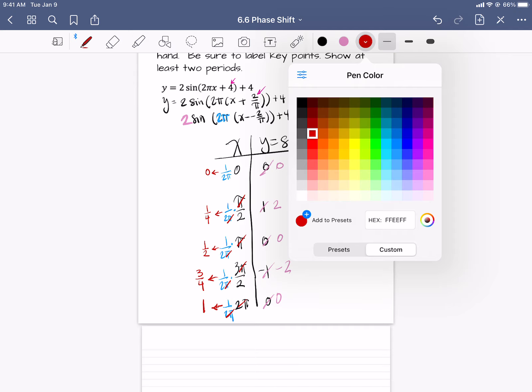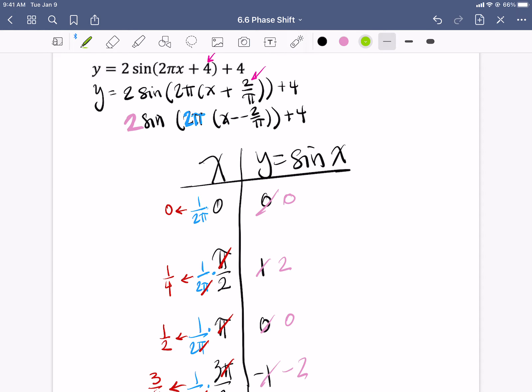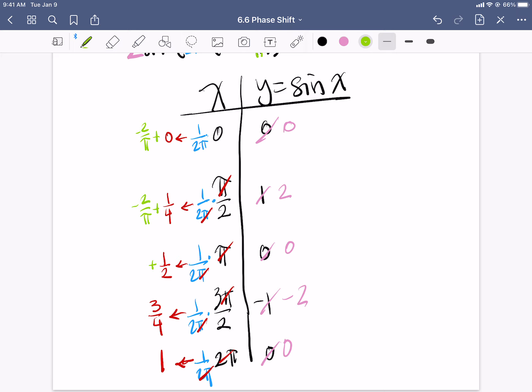Alright, so next up is the phase shift. Add negative 2 over π to these guys. So I'm adding negative 2 over π to all the x values. So here it is, it's negative 2 over π. This is going to be 1 fourth minus 2 over π, this is going to be 1 half minus 2 over π, 3 fourths minus 2 over π, 1 minus 2 over π.